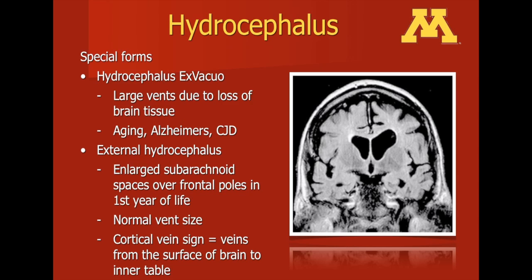There are some other forms of hydrocephalus. One form is hydrocephalus ex vacuo. This is a pseudo-type of hydrocephalus. On imaging the ventricles are enlarged, but not because of increased production of cerebrospinal fluid — rather due to a loss of brain tissue itself, and as the brain atrophies, the ventricles get bigger.